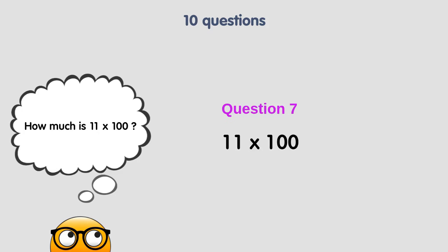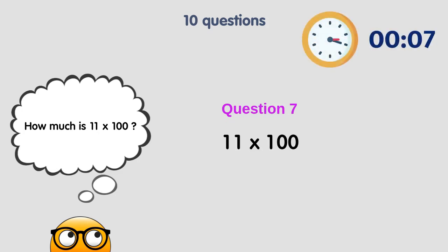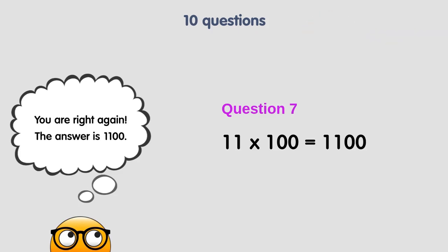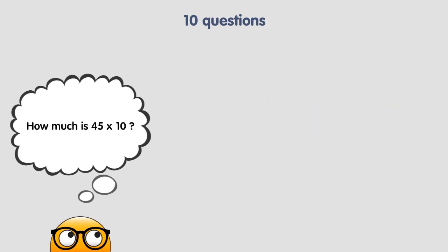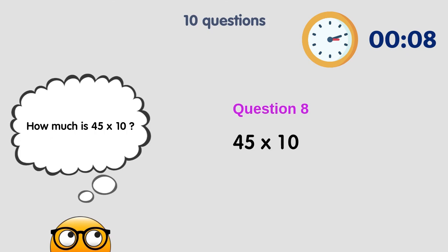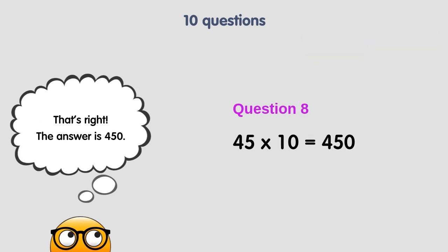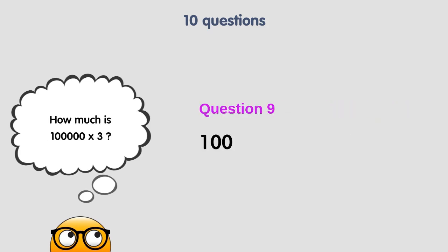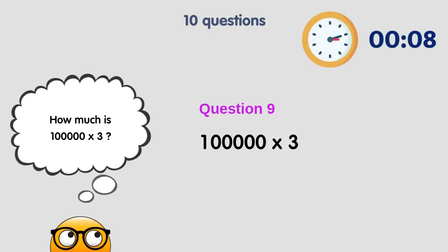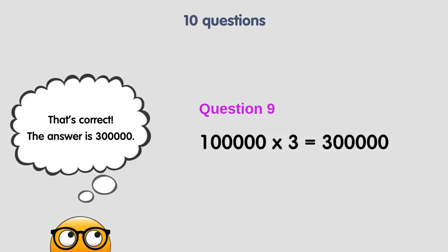How much is 11 times 100? You are right again. The answer is 1,100. How much is 45 times 10? The answer is 450. How much is 100,000 times 3? That's correct. The answer is 300,000.